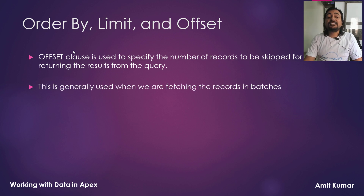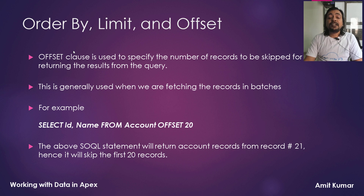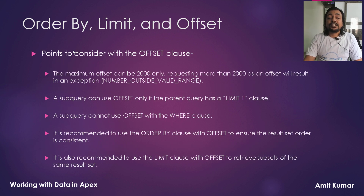OFFSET clause is used to specify the number of records to be skipped when returning results from a query. This is generally used when fetching records in batches. For example, a query with OFFSET 20 will return Account records starting from record number 21, skipping the first 20. Points to consider: the maximum offset is 2000 only — requesting more will result in a 'number outside valid range' exception. A subquery can use OFFSET only if the parent query has LIMIT 1, and a subquery cannot use OFFSET with a WHERE clause. It is recommended to use ORDER BY with OFFSET to ensure consistent result set ordering, and also to use LIMIT with OFFSET to retrieve a subset.